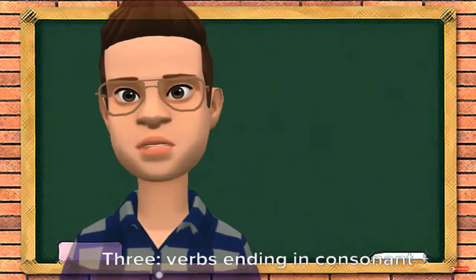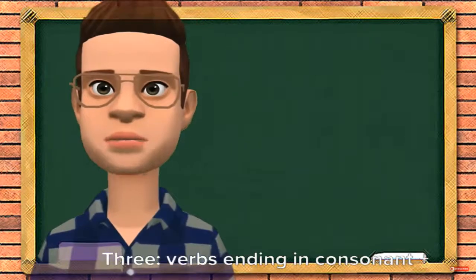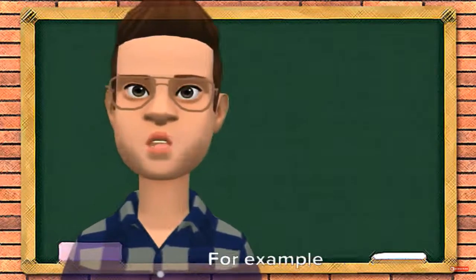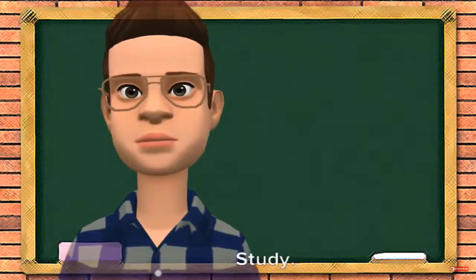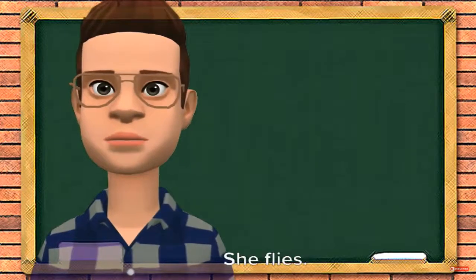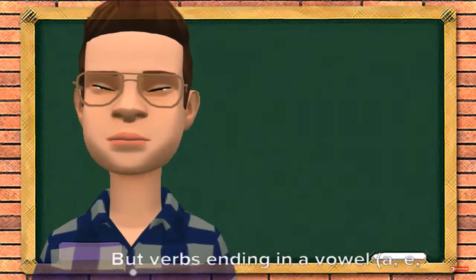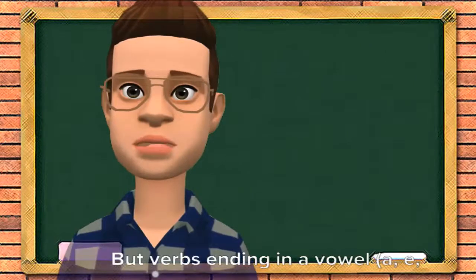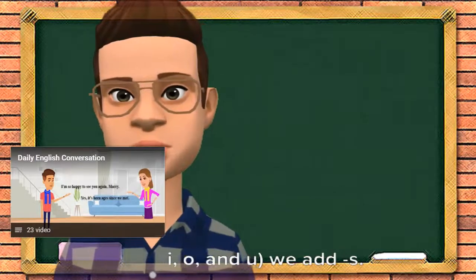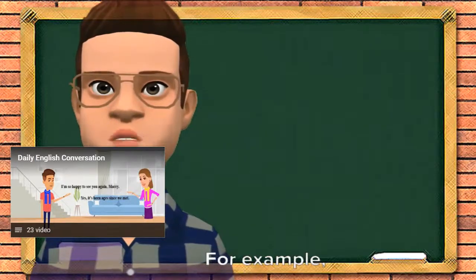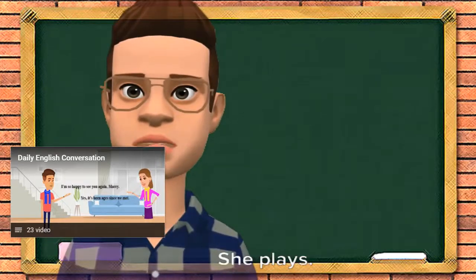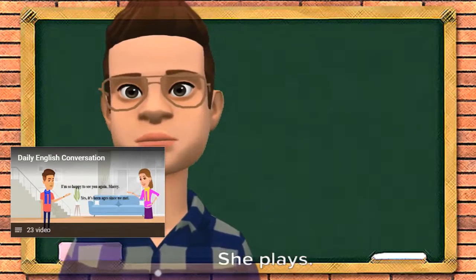Three: verbs ending in consonant plus Y — change Y to IES. For example — study: he studies; fly: she flies. But verbs ending in a vowel (A, E, I, O, U) — we add S. For example — buy: he buys; play: she plays.